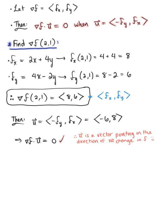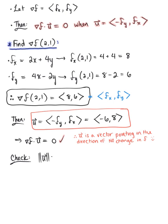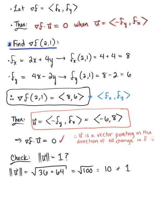Don't get so excited that we found a vector pointing in the direction of no change that we stop — we need this vector to be a unit vector. So we need to check: is the magnitude of vector u equal to 1? The magnitude of u equals the square root of (−6)² + 8², which is the square root of 36 + 64, the square root of 100, which equals 10. Since this does not equal 1, vector u is not a unit vector.